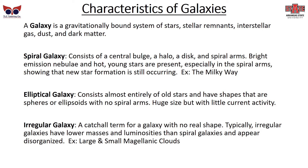Elliptical galaxies consist almost entirely of old stars. They are in the shape of a sphere or ellipsoid with no spiral arms, because they aren't making any new stars. These are usually gigantic but have very little current activity. And then you have irregular galaxies — a catch-all term for a galaxy with no real shape. Irregular galaxies usually have lower mass and luminosity than spiral galaxies and appear very disorganized. The Large and Small Magellanic Clouds are irregular galaxies.